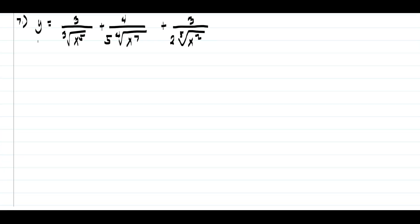For example number 7, we have y equals 3 over the cube root of x raised to 5, plus 4 over 5 times the fourth root of x raised to 7, plus 3 over 2 times the fifth root of x raised to 2.